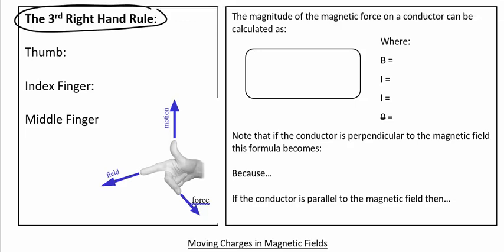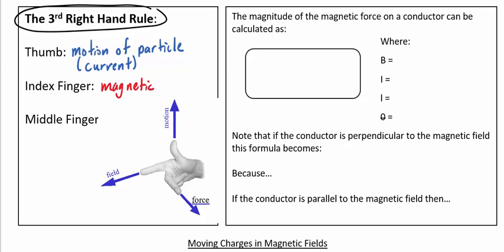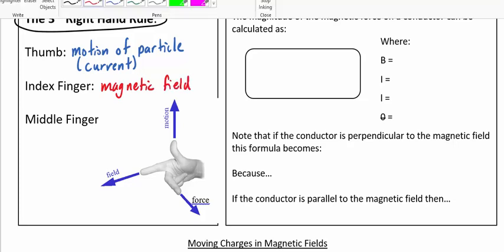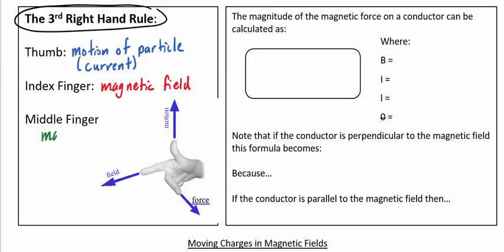With the third right-hand rule, you're going to point your thumb straight up, point your index finger straight out, and then point your remaining fingers perpendicular to those other two — kind of pointing outward from your palm. Your thumb indicates the motion of the particle, or the direction of current if it's going through a wire. Your index finger indicates the direction of the external magnetic field acting on the particle or wire. Your middle finger — or remaining fingers — indicates the direction of the magnetic force.